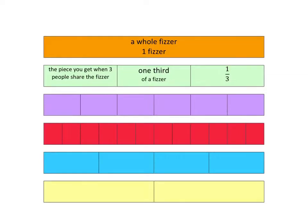Focus on the purple fizzer now. This is cut up in a way that it can be shared with six people. Six people can share it because I've cut it into one, two, three, four, five, six pieces, and the piece that you get will then be just one of those. We call that piece one-sixth of a fizzer and we write it like that.